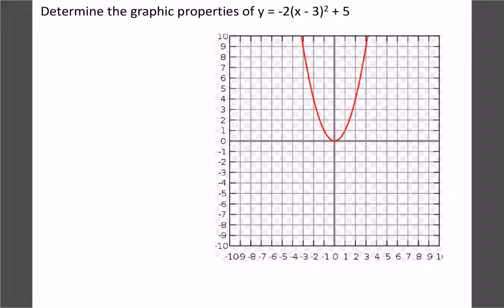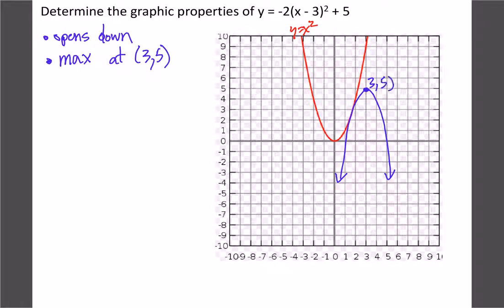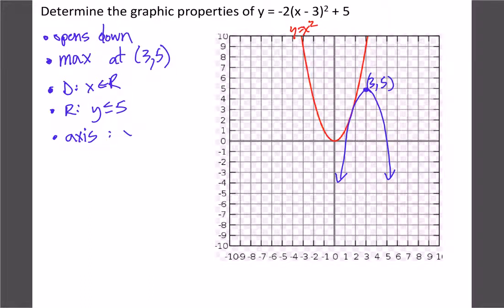Let's go through a sample graph and all of its properties. This is our y equals x squared regular graph. For the new equation, our vertex is going to be at 3, 5 — so go over 3, up 5. We know it's going to be upside down and a little bit skinnier, like negative 2. It opens down because of the negative, so we have a maximum at vertex 3, 5. Our domain is any real number, our range is y less than or equal to 5, and our axis of symmetry is x equals 3.